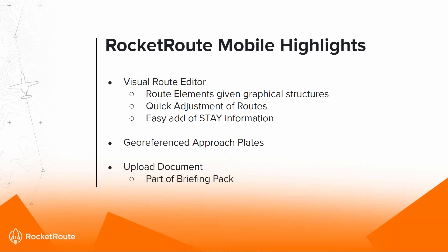The next section covers the Rocket Route mobile highlights. This is made up of three areas: the visual route editor — including route elements, graphical structures, quick route adjustments, and easy addition of stay information — geo-referenced approach plates, and the upload document option, which allows you to add any document to your briefing pack.